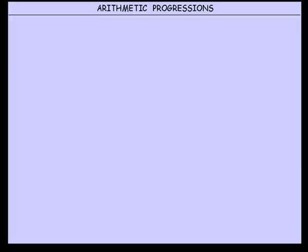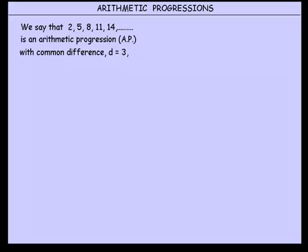We're now looking at what's known as arithmetic progressions. Now we can say that 2, 5, 8, 11, 14 is an example of an arithmetic progression, AP for short,